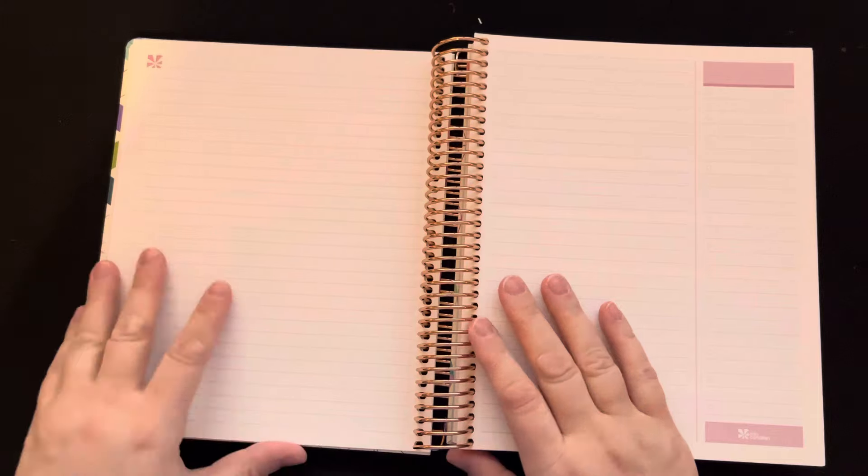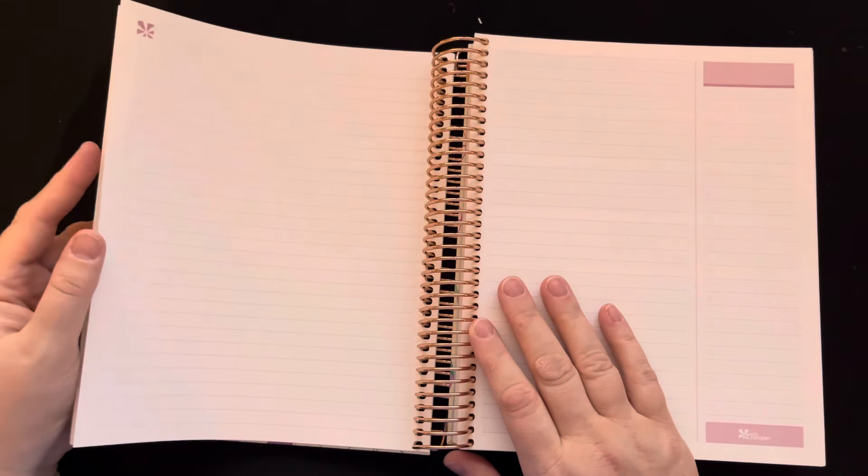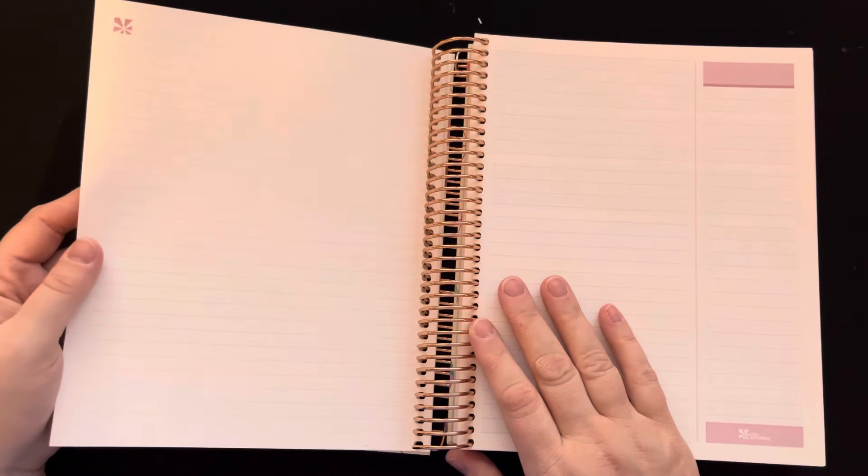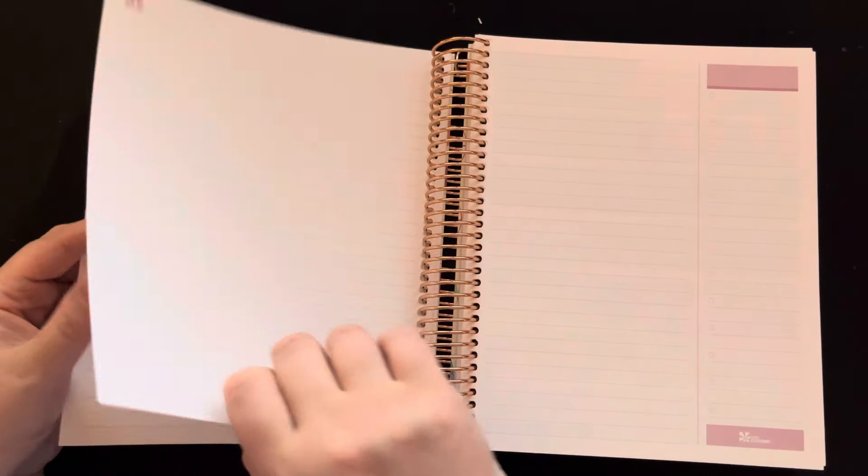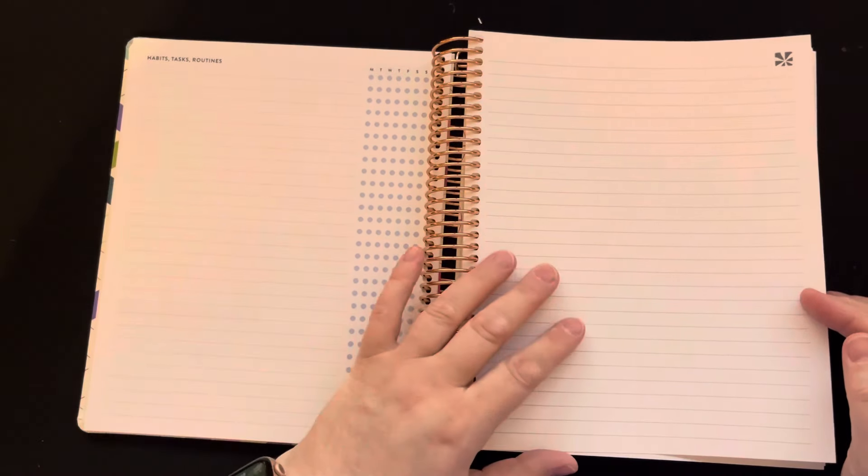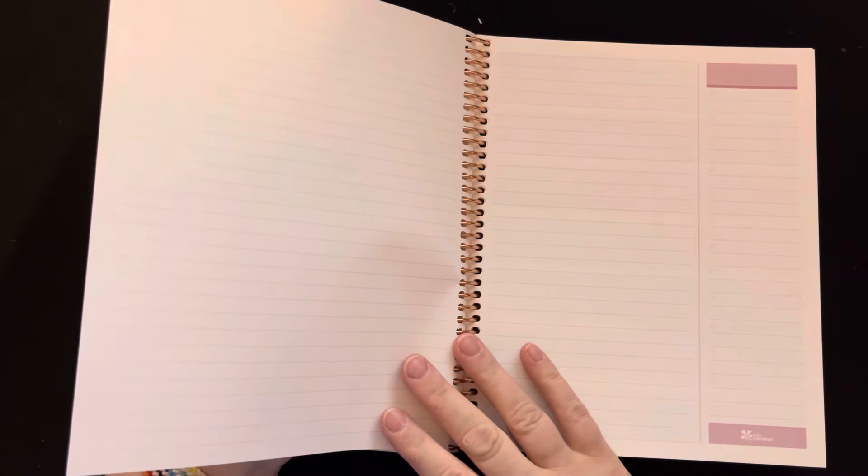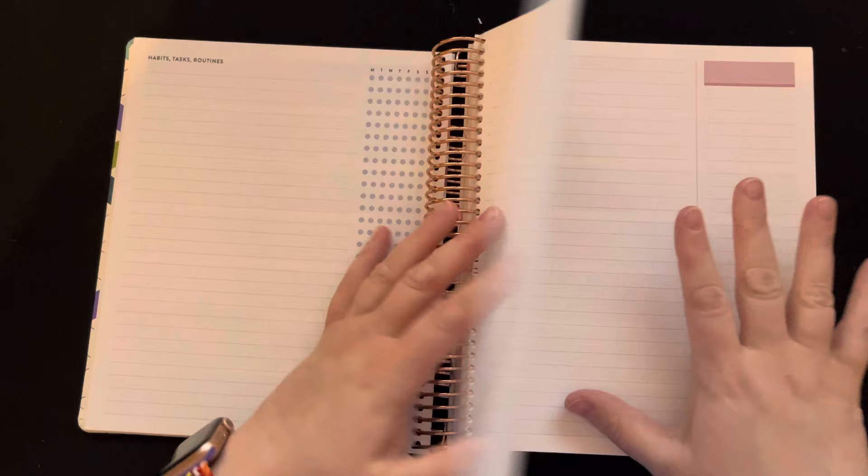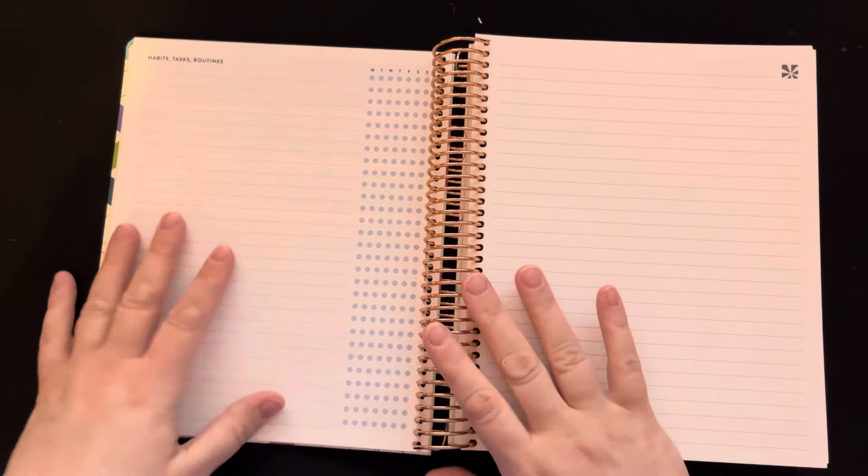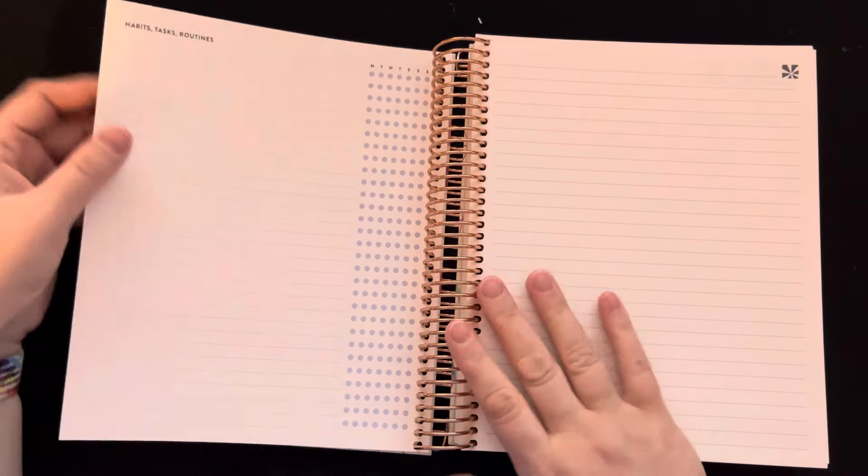So you actually have three pages for every week. I think it sounds great to have three pages for every week, but anybody who uses their planner as a work planner would say three pages is both too much and not enough. You're not going to use it for meeting notes probably because there wouldn't be enough space and maybe there's too much space to track projects.